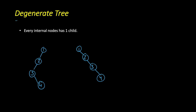Now let's look at another type which is the degenerate tree. Here every internal node has just one child, so it looks like a linear structure very similar to a linked list. At every node, only the left or the right child is present. Performance-wise it is very similar to a linked list — with four nodes you have four levels, so the number of levels equals the number of nodes and the search time will be of the order of n.